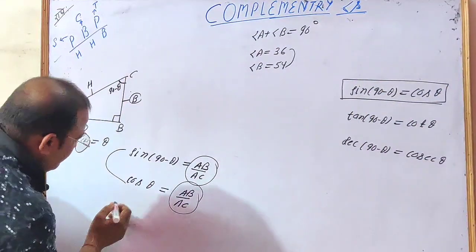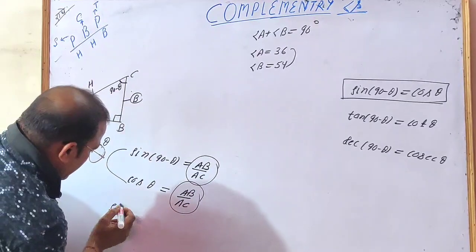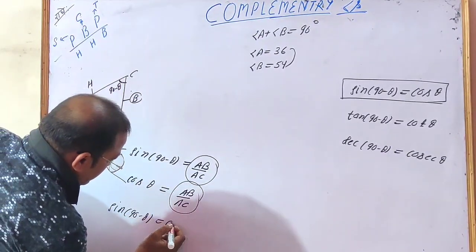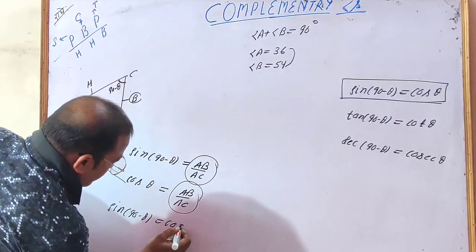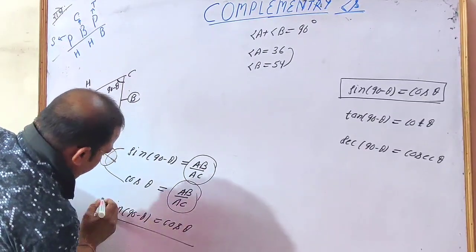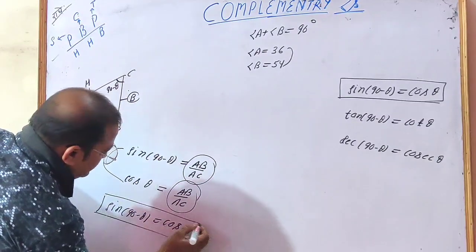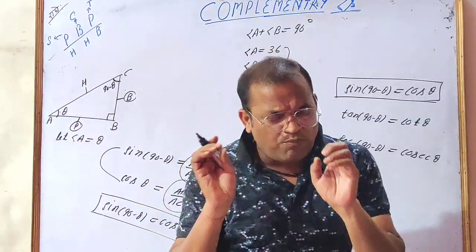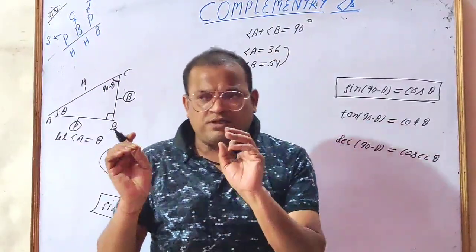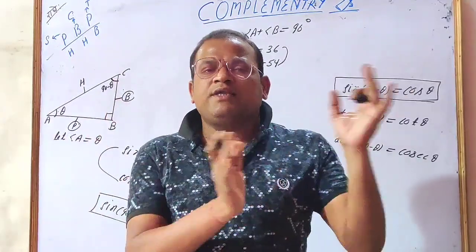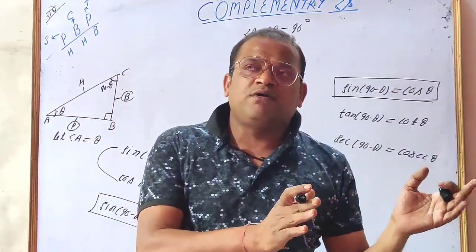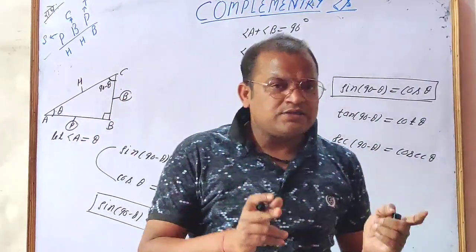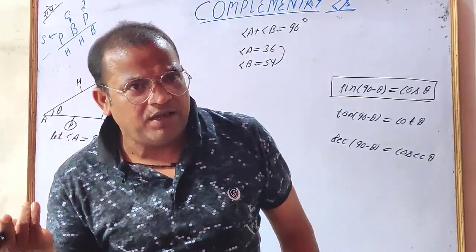We can also state that sine(90 minus theta) is equal to cos theta. In this chapter, you need to know which ratio converts to which: sine changes to cos, cos changes to sine; tan changes to cot, cot changes to tan; sec changes to cosec, cosec changes to sec — giving a total of 6 relations.